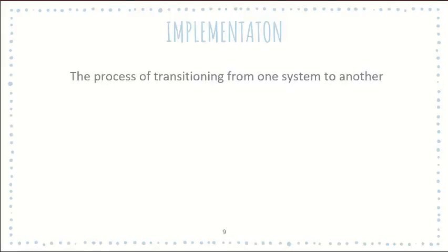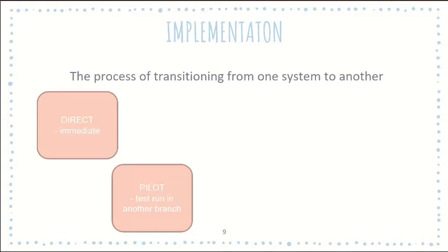Next we've got implementation, which is the process of changing from the current system to the new one. We've got direct, which is immediate. From this week onwards we are not using the old system anymore. This can be troublesome if something goes wrong with the new system. We also have pilot, which is when you test run it in another branch. So if they use the old system in one branch and the new system in another branch, we would consider that a pilot. Once everything is running smoothly, then only would the other branches also start to use the new system.